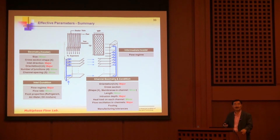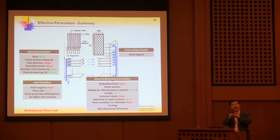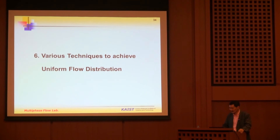For channel geometry, channel orientation (vertical or horizontal) is important, and the intrusion depth of the channel into the header also makes flow distribution very different. You may also have flow oscillations in the channel, which must be prevented. Flow regime problems in the intermediate header also need consideration. This is quite a difficult problem — in industry (for example, at LG Electronics), achieving uniform flow distribution is more art than pure engineering.